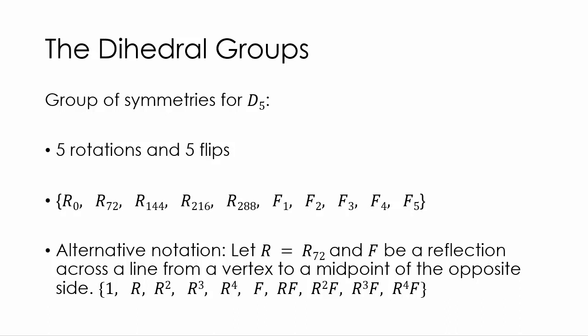Okay. So groups of symmetries for D5, well, we have five rotations and five flips. So we start with the trivial rotation, this R sub zero. And then it goes up from there, 72, 144, 216, 288, and then we're back to 360. Then we have these flips, these reflections. And we're going to use F because we don't want to use R again. So we have flip one, two, three, four, and five. Those are the ones that go from each of the five vertices to the opposite midpoint, the midpoint of the line or of the side opposite of it.